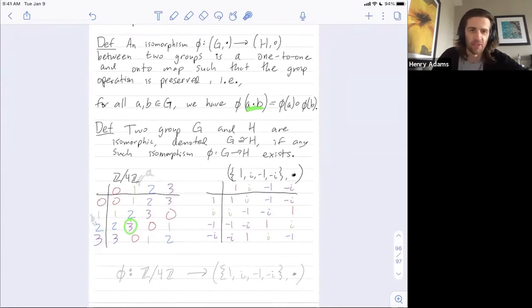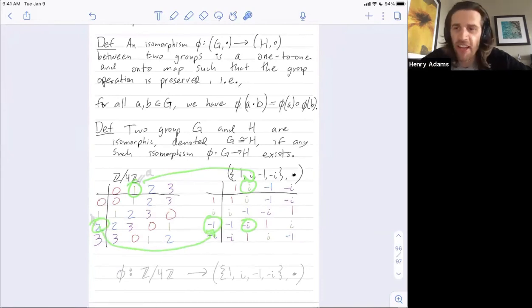I add a plus b, 1 plus 2, and I get 3. And then I can map 3 over. When I map 3 over, you'll remember 3 gets mapped to negative i. So when I map 3 over I should get negative i. So this side is negative i. Let's figure out what the other side is. The other side says first map a over to get i and map b over to get negative 1, and then combine i and negative 1. And when you multiply i and negative 1, you indeed get negative i. So whether I combine in the first group and then map over, or whether I map a and b over and then combine in the second group, I should get the same answer.